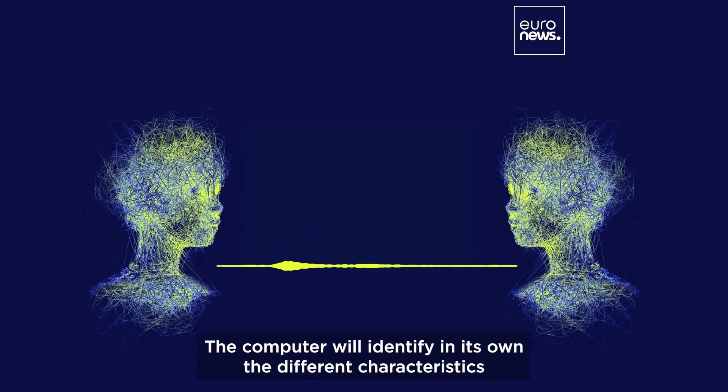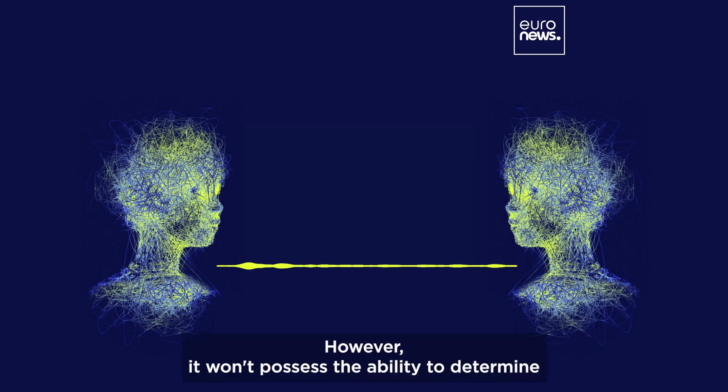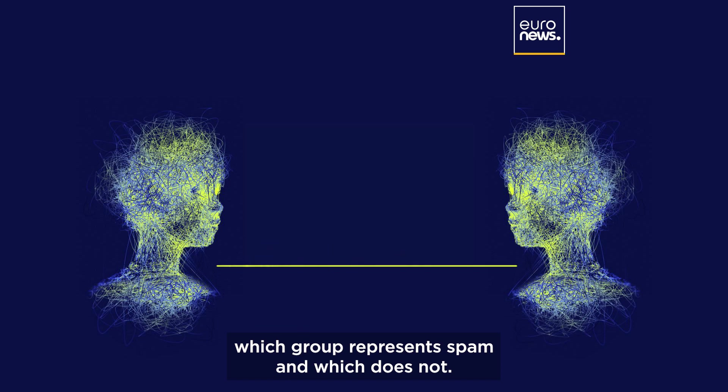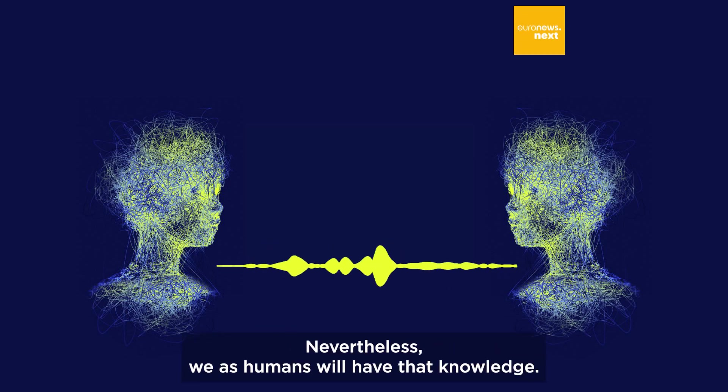Coming back to the example of the emails, now I'm going to give the same spam and not spam, but I don't want to tell anything. The computer will identify on its own the different characteristics and categorize them into two separate groups. However, it won't possess the ability to determine which groups represent spam and which does not. Nevertheless, we as humans will have that knowledge.